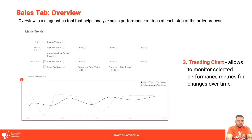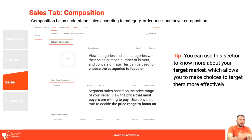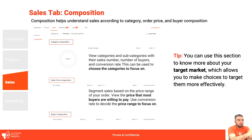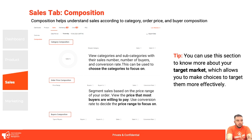The sales tab overview is a trending chart that lets you monitor selected performance metrics for changes over time, and you can customize it. In the composition section, you can learn more about your target market to make choices to target them more effectively. You can view categories and subcategories with sales numbers, number of buyers, and conversion rates. You'll also see category composition, order price composition — which segments sales based on price range — so you can view the price most buyers are willing to pay and use conversion rate to decide the price range to focus on, plus buyer composition.